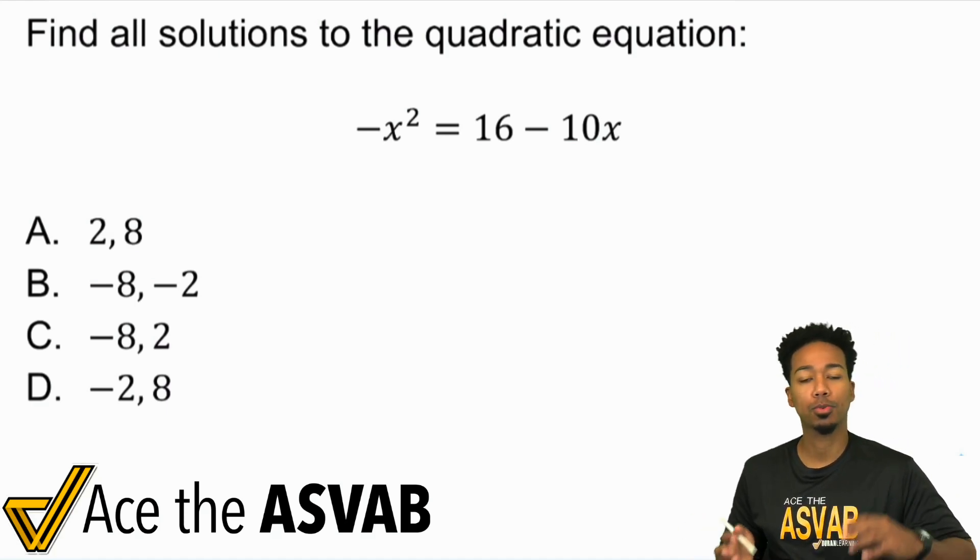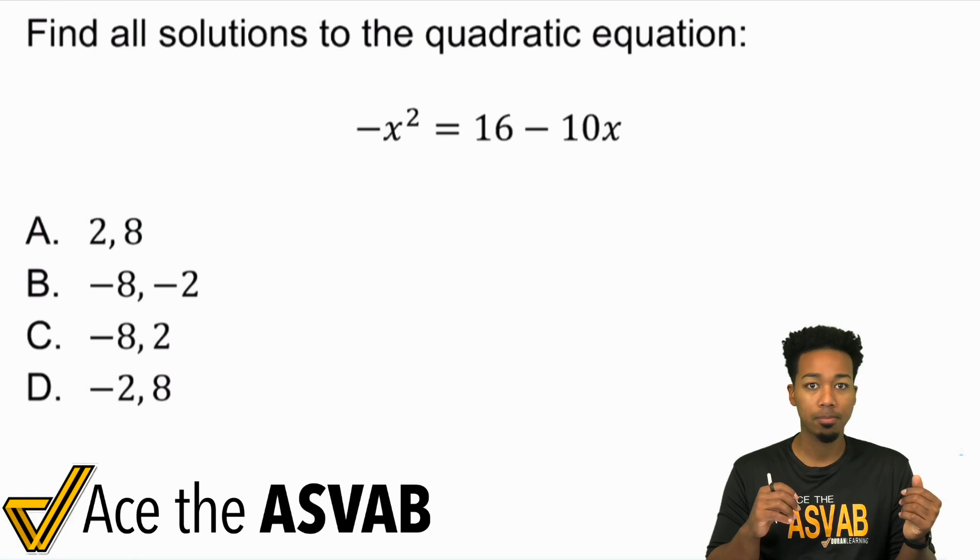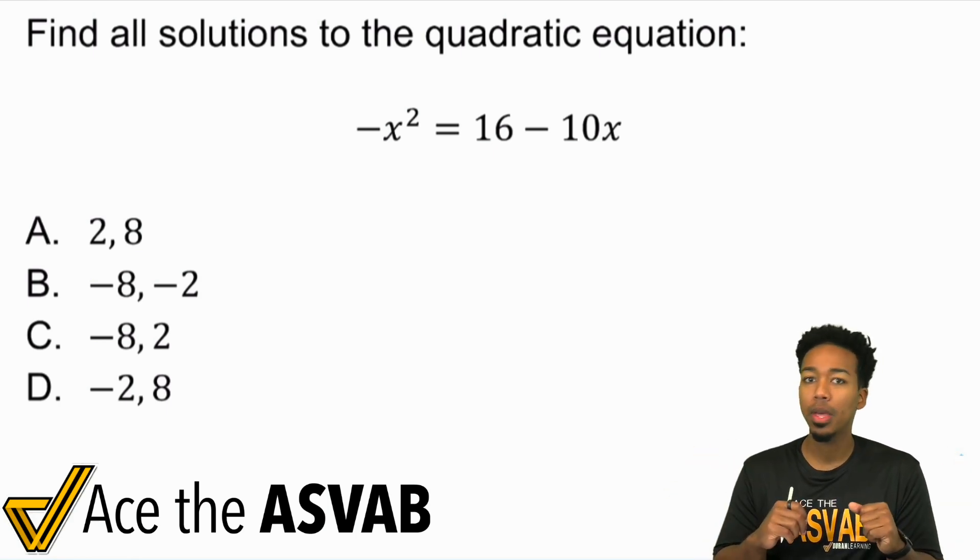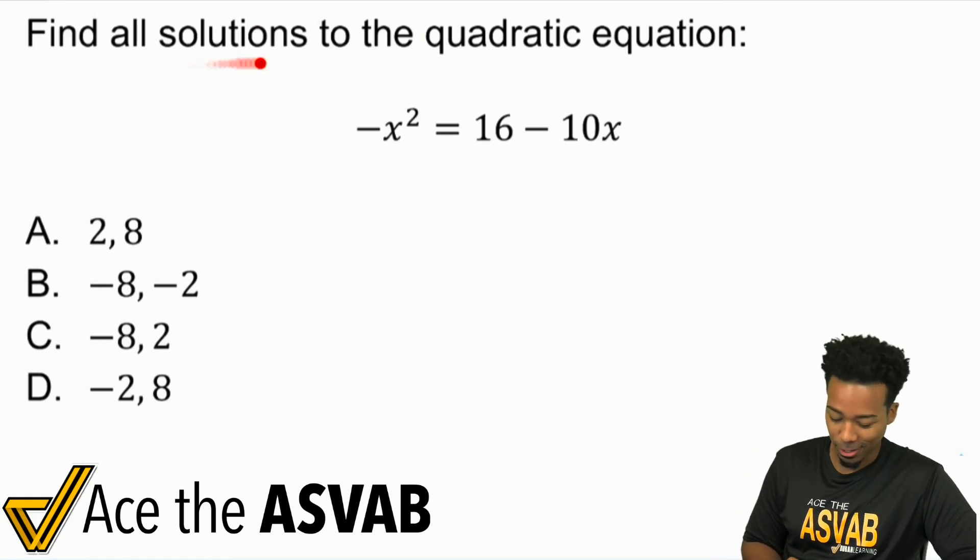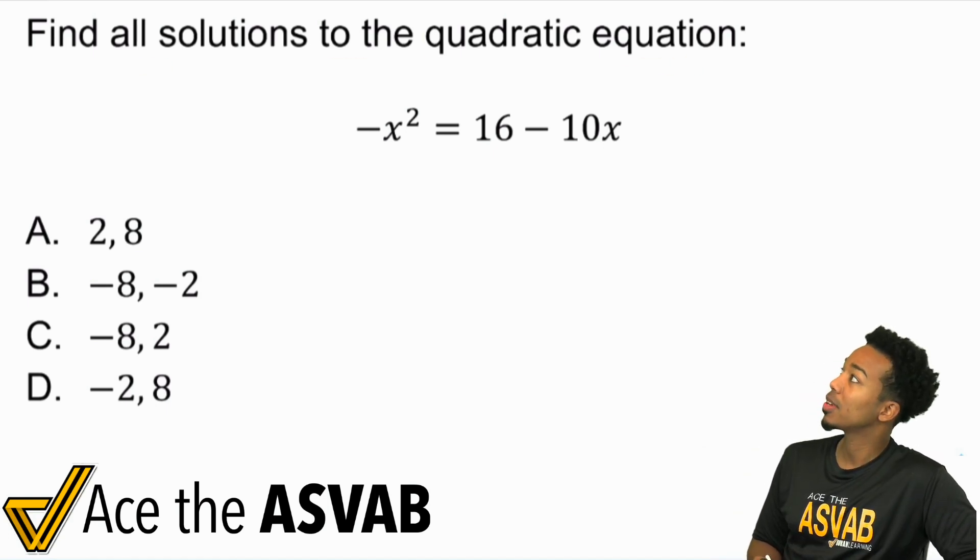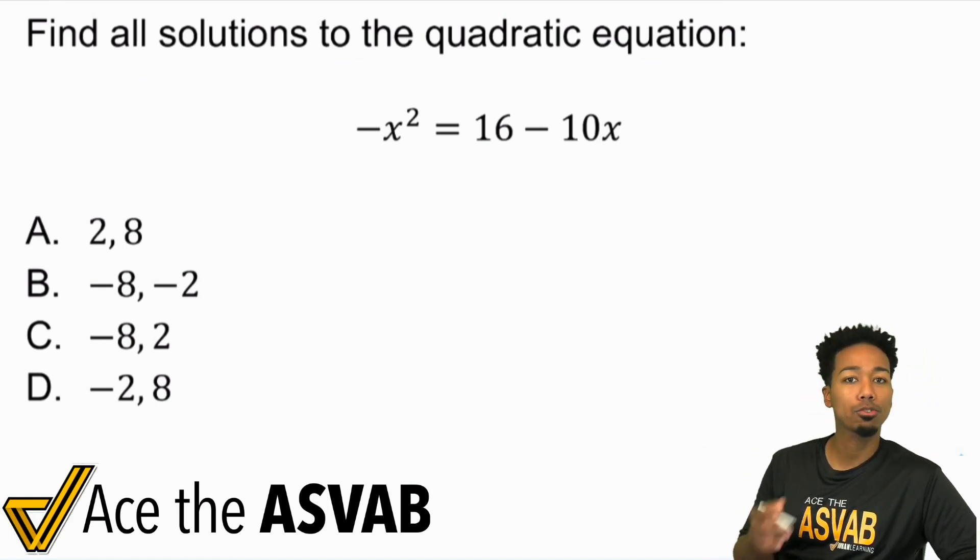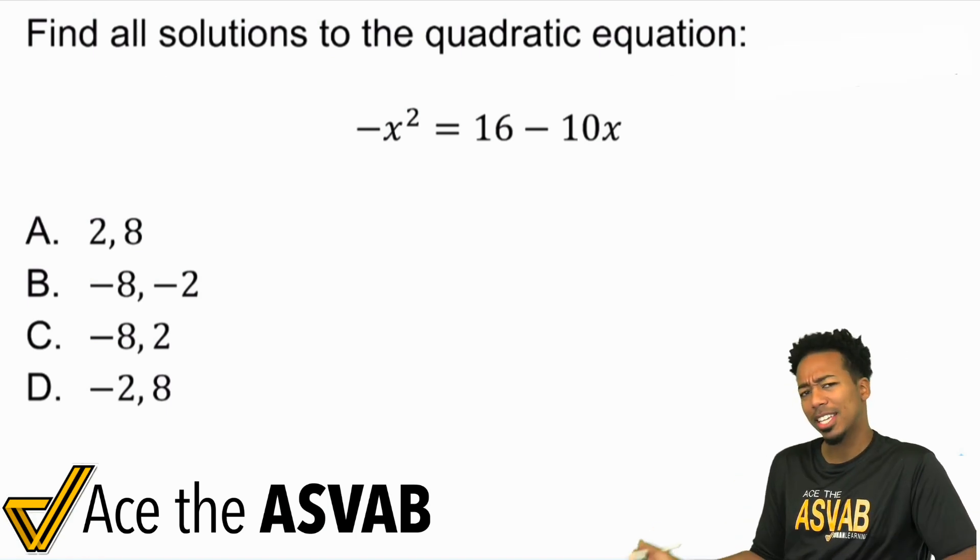The only reason this is a challenge problem is because we're mixing in two separate topics, but they're pretty much one of the same here. We're mixing in solving equations, as you can clearly see behind, the solutions to the equation, and we're also mixing that with factoring polynomials. How do we get this done?